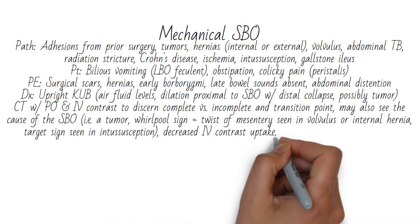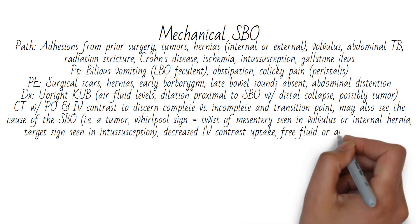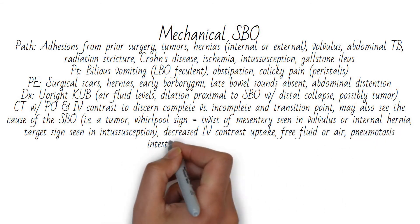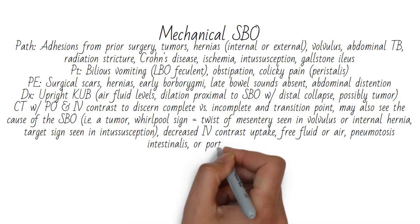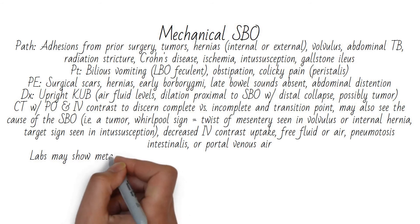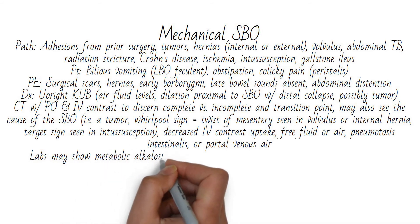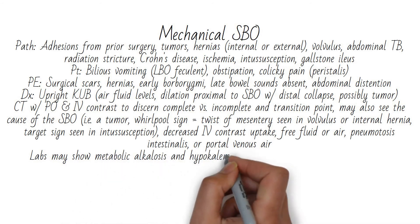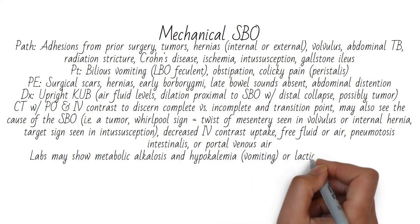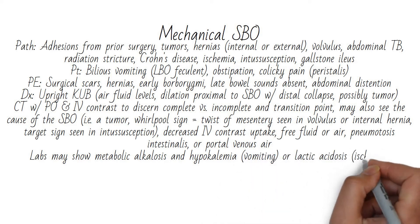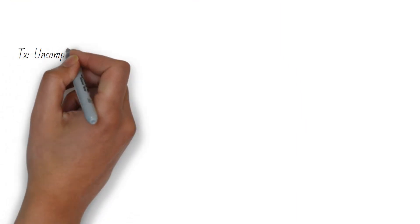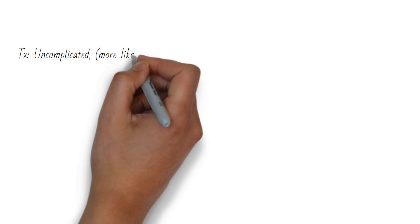Other CT findings include an obstructing tumor, whirlpool sign — a twist of vessels within the mesentery seen in volvulus — or target sign seen in intussusception. Signs of ischemia include decreased IV contrast uptake in part of the bowel, portal venous air, or pneumatosis intestinalis. Free fluid or air suggests perforation. Labs may reveal metabolic alkalosis with hypokalemia from vomiting, or lactic acidosis from ischemia.